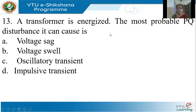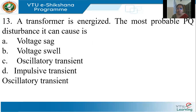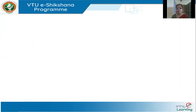A transformer is energized. The most probable PQ disturbance it can cause is an oscillatory transient. Whenever transformers or capacitors are energized, they cause oscillatory transients, because you have a second-order RLC circuit — capacitors in the line, inductance of the windings, and resistance — which results in an oscillatory transient.